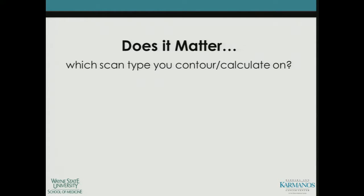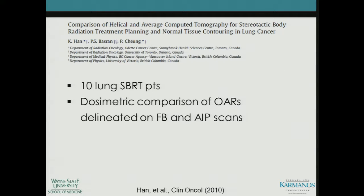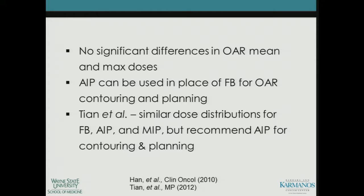Does it matter which scan type you contour and calculate on? This has been discussed already within this forum. Here I'll show a couple of papers. One looks at lung SBRT patients, performing a dosimetric comparison of OARs delineated on free-breathing and average intensity projection (AIP) scans. The results showed no significant differences in OAR mean and max doses, and that AIP can be used in place of free breathing for OAR contouring and planning. Another paper did this for both OARs and ITVs, also seeing similar dose distributions for free breathing, AIP, and MIP, but recommending AIP for both contouring and planning. Use of MIP has to be done with caution, particularly in regions with interfaces between high- and low-density structures.